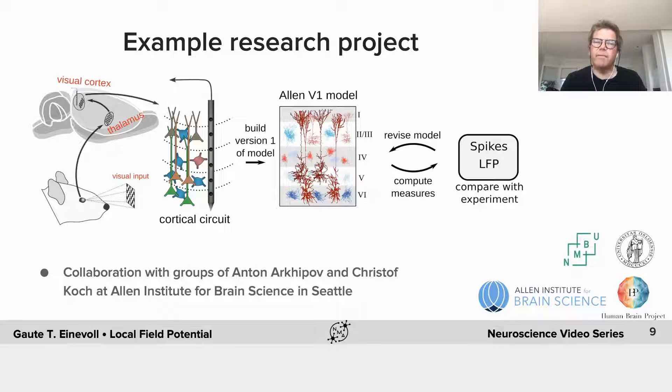The LFPs, on the other hand, gives inherently a measure of the population activity in neurons. So this could be a better way to constrain models, to in addition to comparing with spikes, also compare with LFPs.